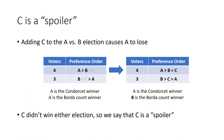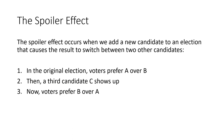Getting rid of C changes the result of the Borda count election. With C included, B was the winner, but if we eliminate C, A is the winner. This is called the spoiler effect. When we add C into the election, the Borda count winner changes from A to B. C never really had a chance of winning, but simply being there changed the result between the other two candidates. So C is a spoiler — C's presence didn't help C win, but it changed the outcome for someone else.